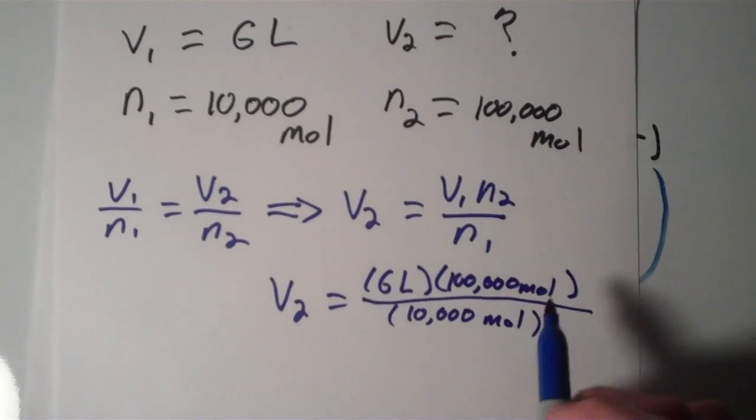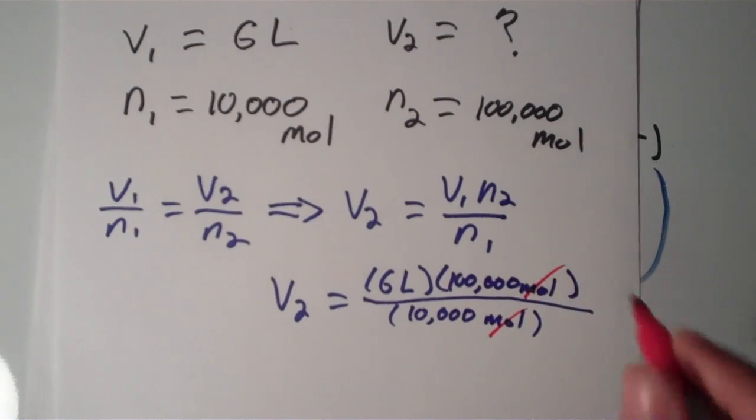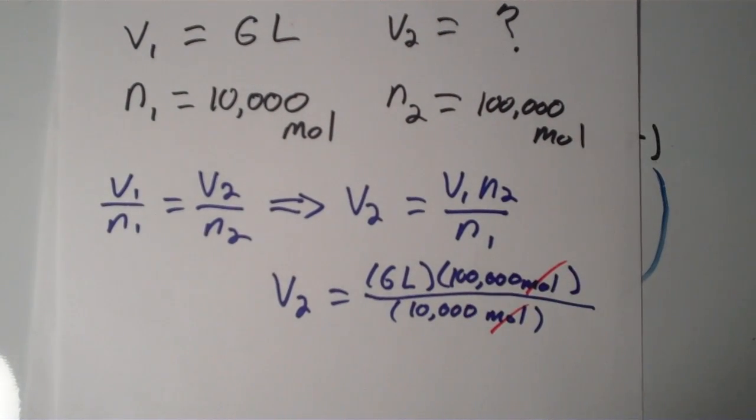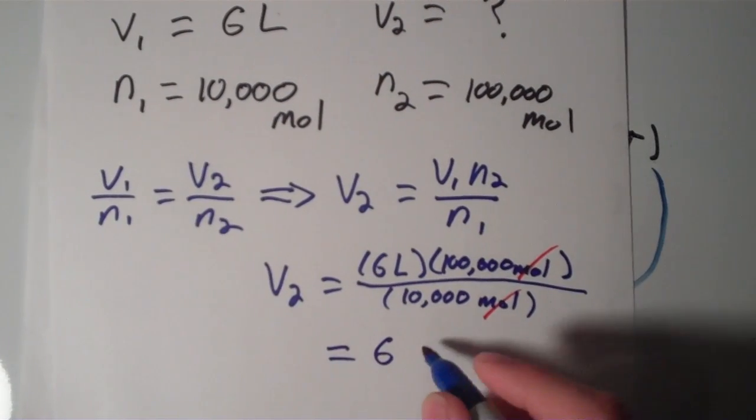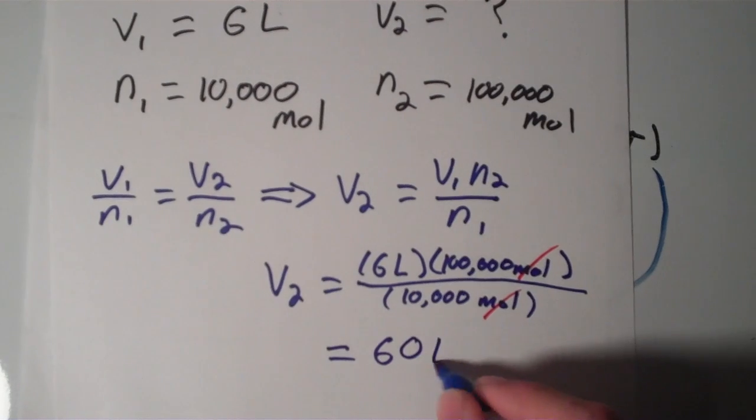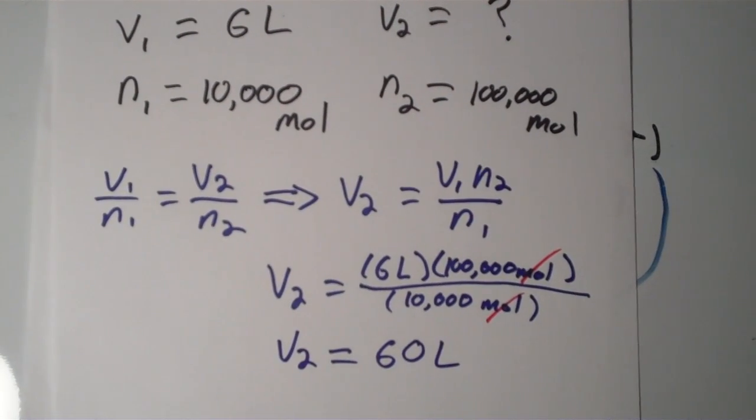And 100,000 over 10,000, that's going to be 10, 10 times 6 is 60. The moles cancel, so we're left with nothing but liters, so that means that our V2 is going to be 60 liters. So there you have it, there is Avogadro's Law.